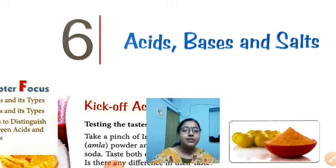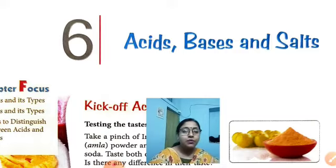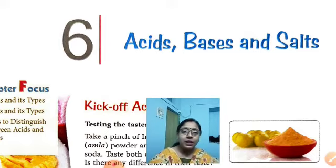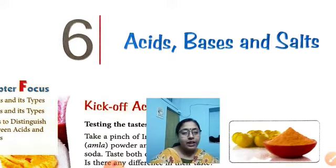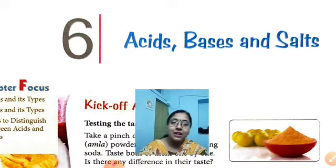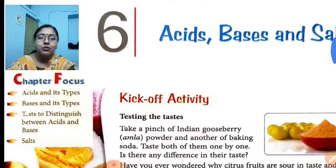Acids, bases and salts are the 3 important groups of chemical compounds which are useful in our daily life. Acid like hydrochloric acid is present in our stomach. Bases like soap or baking soda, which is used in bakery, and salt like common salt, which is used in cooking. In this chapter we will study about acids, bases and salts.